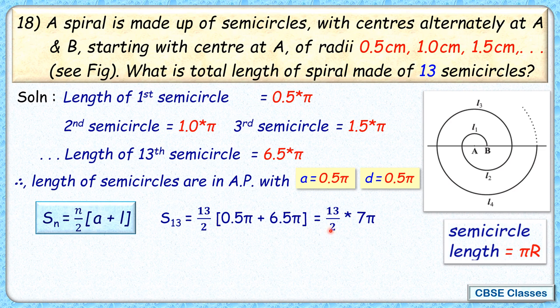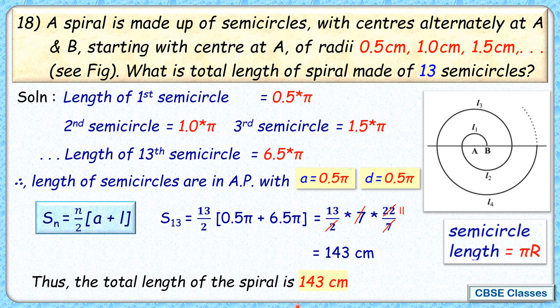This term will become 13 by 2 times 7 times 22 by 7. Solving it, 7 gets cancelled and 2 will cancel with 22, this becomes 11. The total length is 13 times 11, which is 143 cm. The total length of this spiral formed by 13 semicircles is 143 cm, and that's our answer.